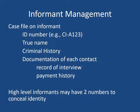The case file should have the true name of the informant, their criminal history, the crimes that they've committed, if they've served time — we need to know what their criminal history is. Other personal information: where they work, where they live, family members — things of that nature. It's helpful to know in the event you may have to go after the informant; sometimes you need to know where to start looking. Also, documentation of each contact with the informant — each time the informant is contacted there should be a record of interview made on that contact.